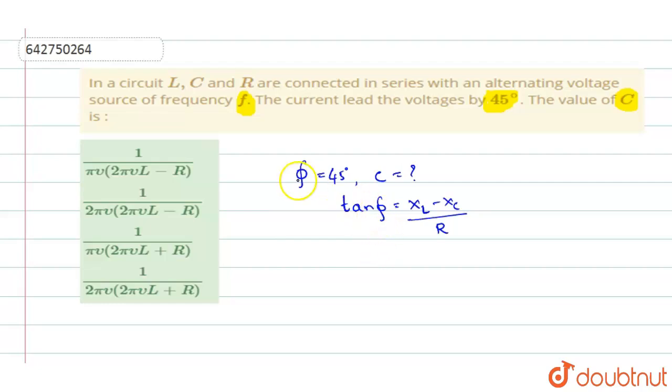So phi, they have given as 45, so we will substitute it. Tan 45 degrees is equal to XL, which is inductive reactance. In terms of frequency, XL will be equal to 2 pi FL minus XC, which is 1 by 2 pi FC, whole divided by R.